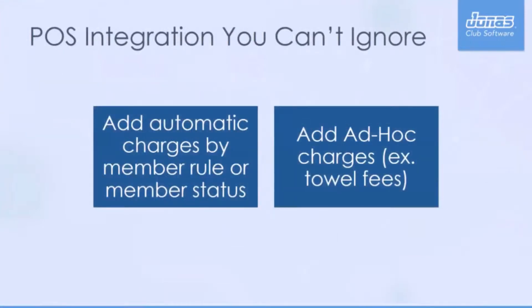There is integration that ties into the point of sale system. What that's going to allow you to do is add automatic charges by a member rule or member status. So what we mean by that is if I am a Platinum member and I come to the gym and grab a towel, I'm not going to pay for that. But if I'm a social member, I might need to pay for that — the system is going to know and charge me accordingly.